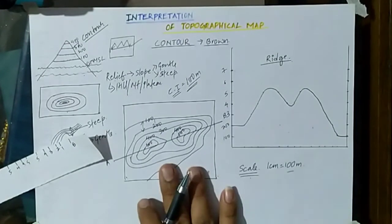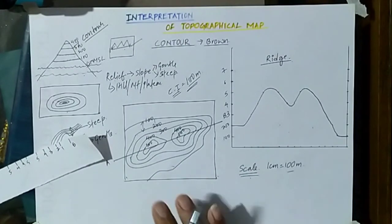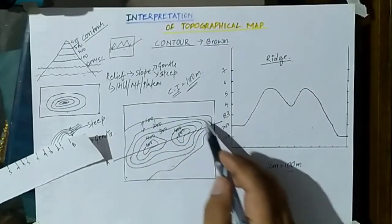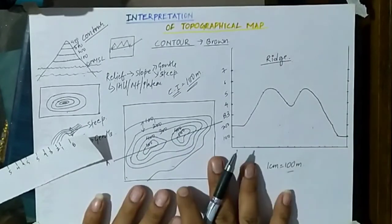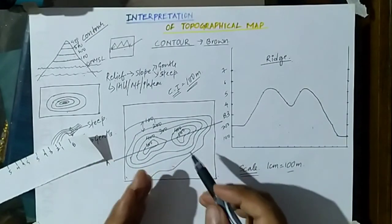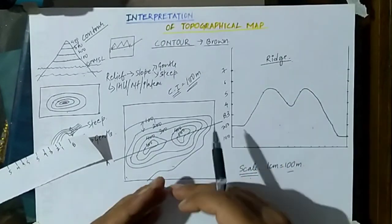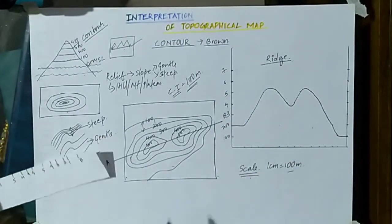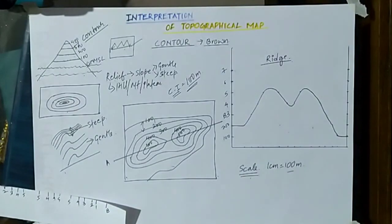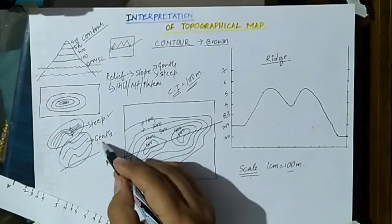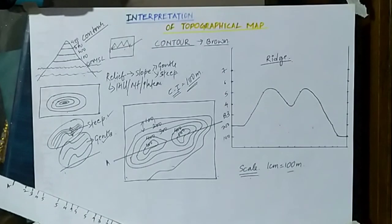So in this way, with the help of contours we can identify the relief features present on the map. If we have to represent a relief feature on the map, we draw contours. The questions will ask you to identify what kind of relief feature is present — so just look at the contours. If contours are very close, it is a steep slope; if they are far apart, it is a gentle slope. Thank you for watching — I hope this video was quite helpful.